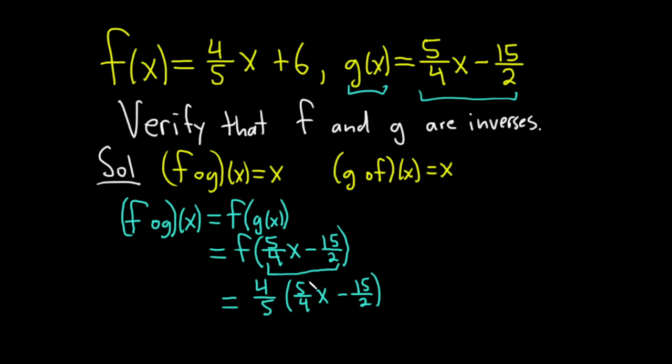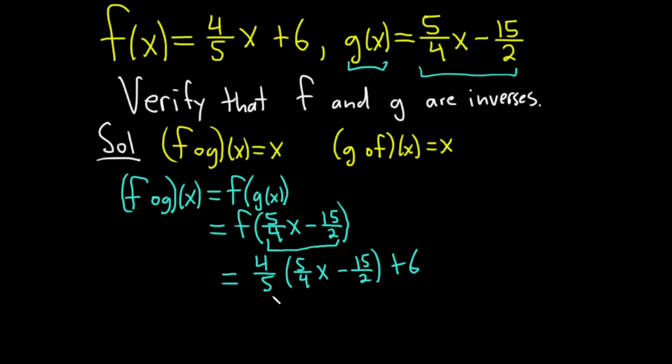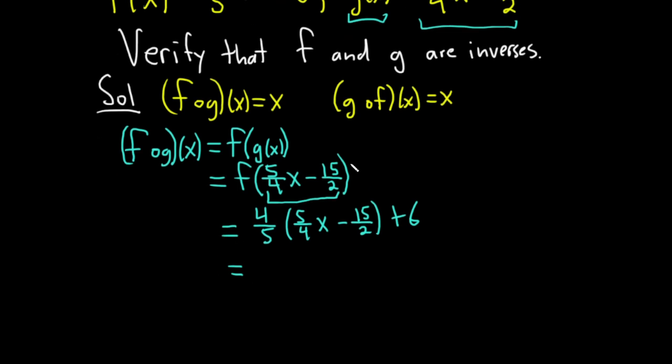Alright, so it's 4 fifths times x, that's your x plus the six on the outside. So be really really careful here. Okay, so now we're going to go ahead and distribute. So 4 fifths times 5 fourths x. And then same thing here, 4 fifths times this. So minus 4 fifths times 15 over 2. And then we still have the plus and the 6.